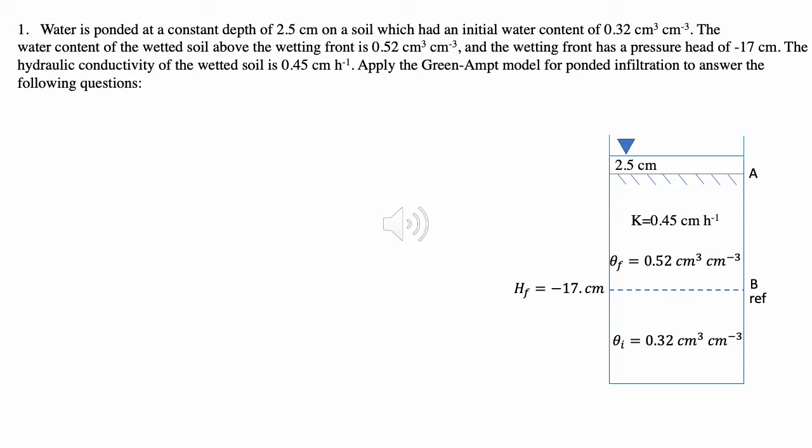This problem starts: water is ponded at a constant depth of 2.5 centimeters on a soil which has an initial water content of 0.32 cm³/cm³. The water content of the wetted soil above the wetting front is 0.52 cm³/cm³. The wetting front has a pressure head of negative 17 centimeters. The hydraulic conductivity of the wetted soil is 0.45 centimeters per hour. Apply the Green-Ampt model for ponded infiltration to answer the following questions.